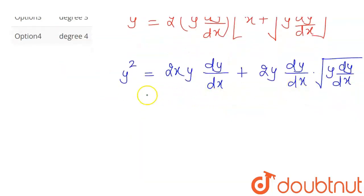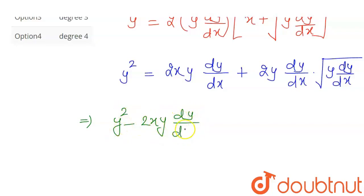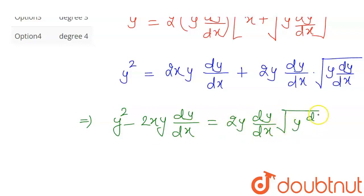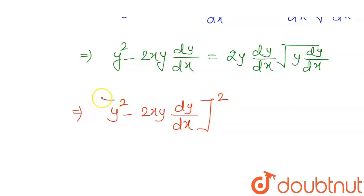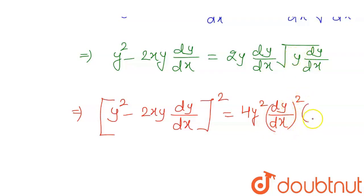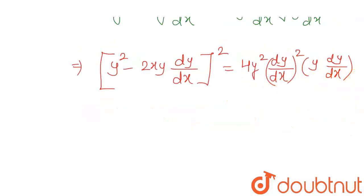We take the first term of the RHS to the LHS, giving y² − 2xy(dy/dx) = 2y(dy/dx)·√(y dy/dx). Now squaring both sides removes the square root on the RHS. So: (y² − 2xy dy/dx)² = 4y²(dy/dx)²·(y dy/dx). The square root problem is now resolved.